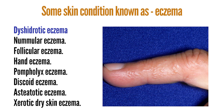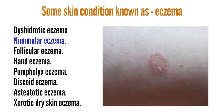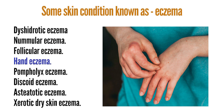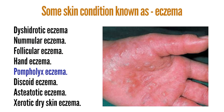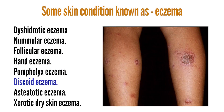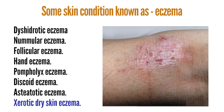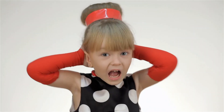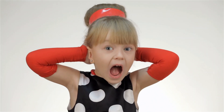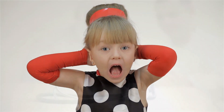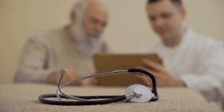There are also some conditions known as eczema. They include: dyshidrotic eczema (also called dyshidrotic dermatitis), nummular eczema, follicular eczema, hand eczema, pompholyx eczema, discoid eczema, asteatotic eczema, and xerotic dry skin eczema.